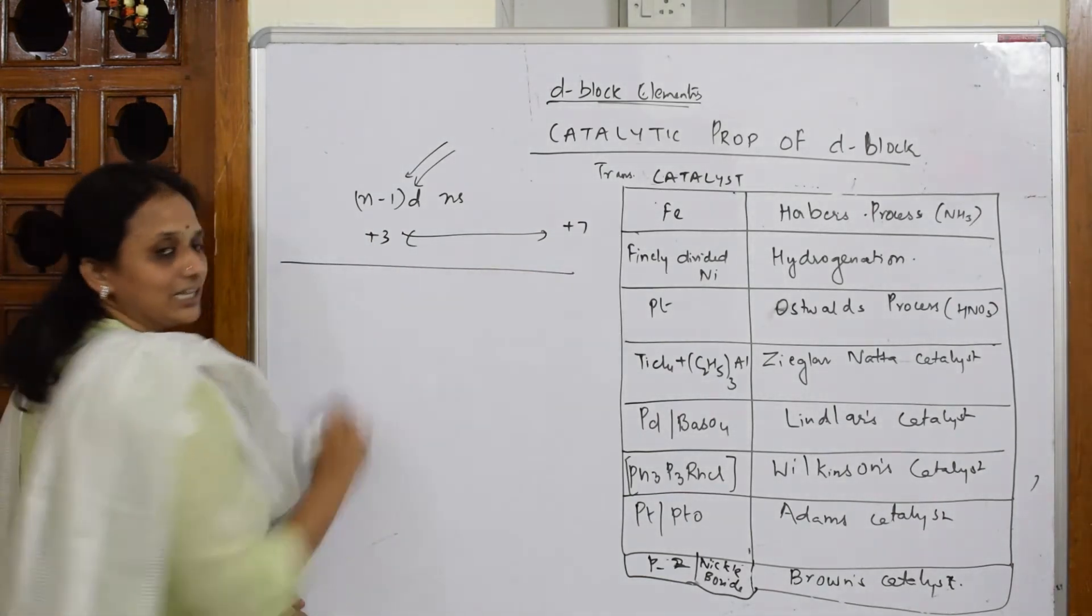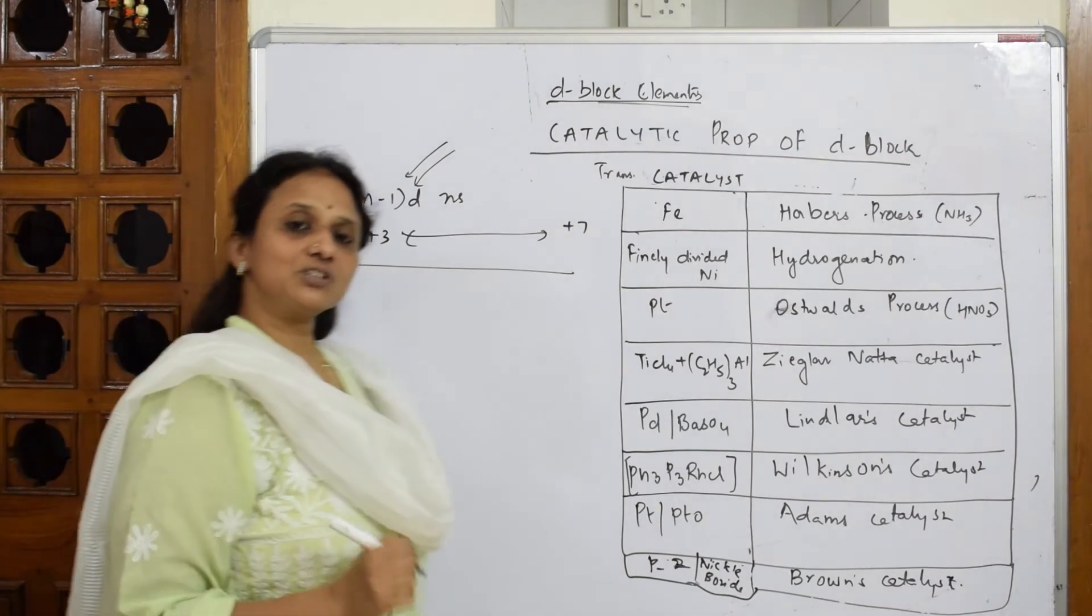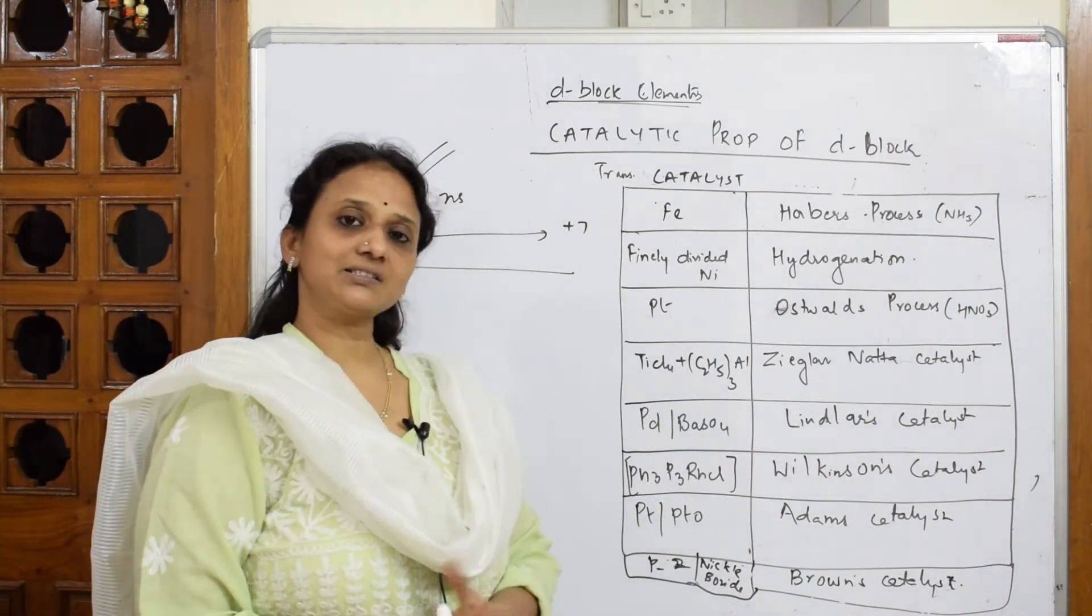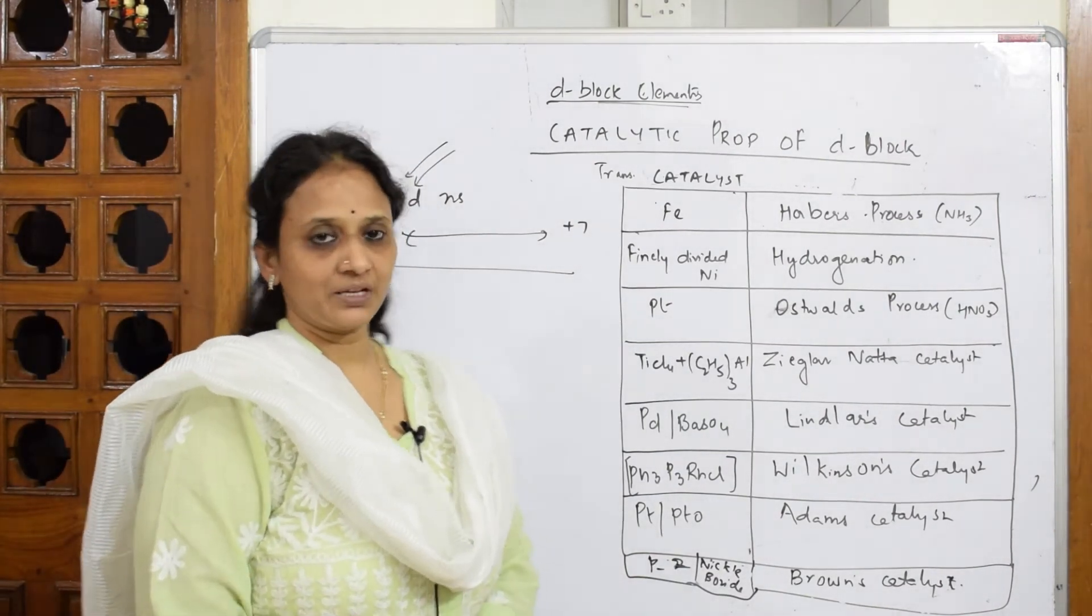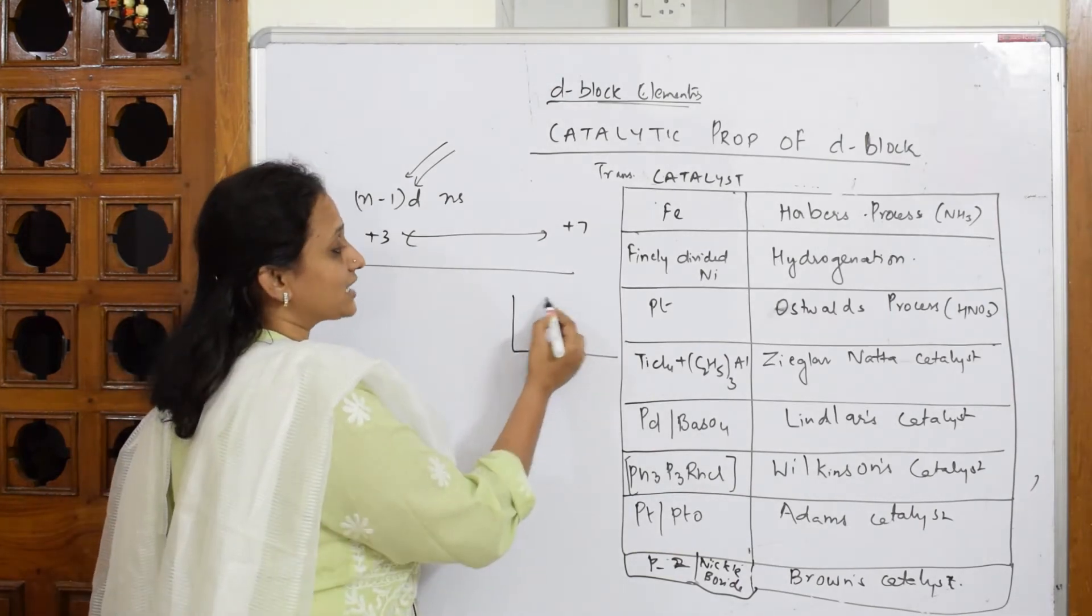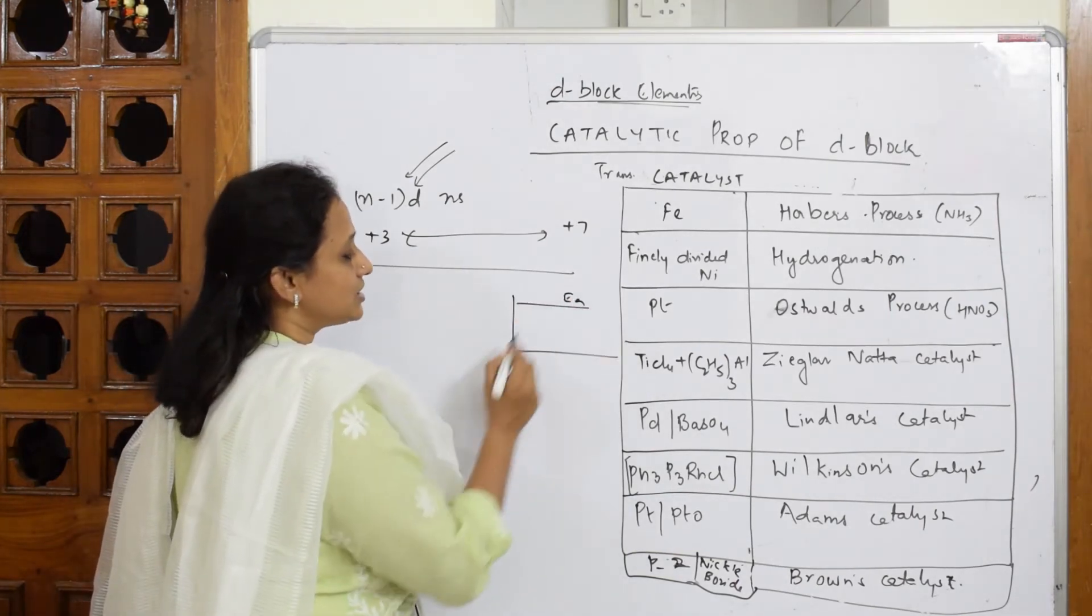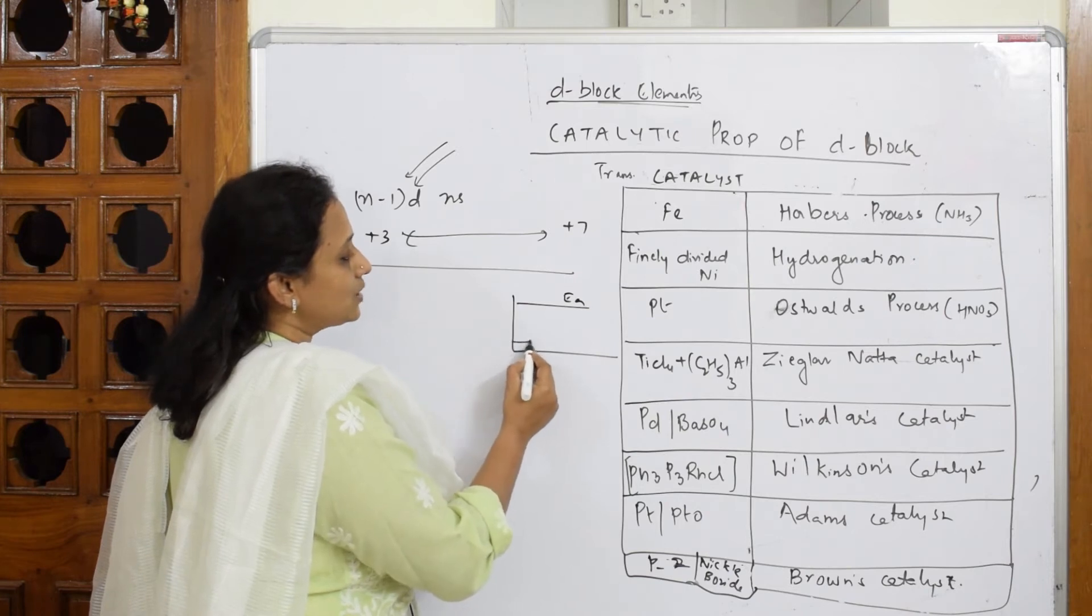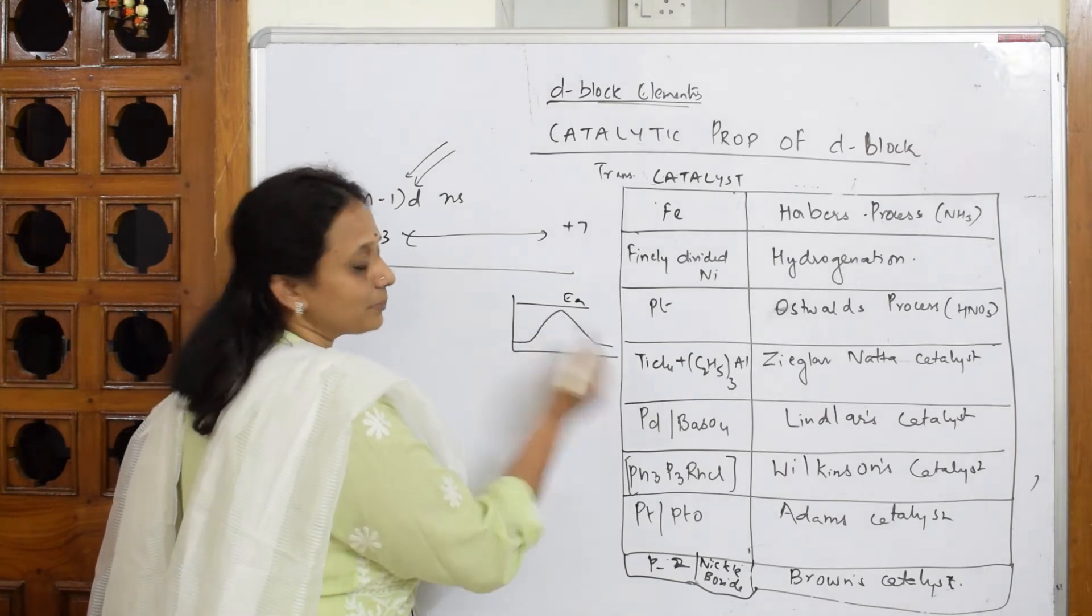Now, when I have to take a d-block element, first, what is the role of a catalyst? Catalyst is something which is going to speed up the reaction. It has to lower that activation energy. This is your activation energy. Your catalyst will lower the activation energy and try to form the products.